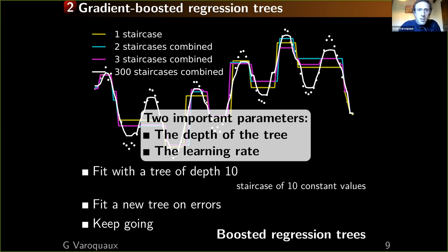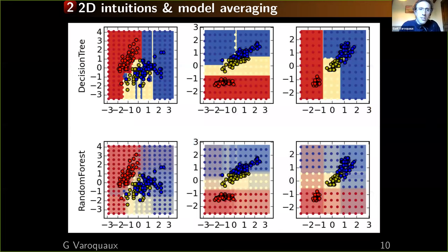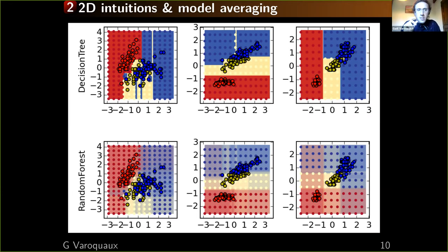Another intuition: classification on a 2D dataset. A single decision tree produces rectangles — it's a bunch of if-thens on values of one coordinate or another. With a random forest combining many decision trees, the decision boundaries become more blurred.